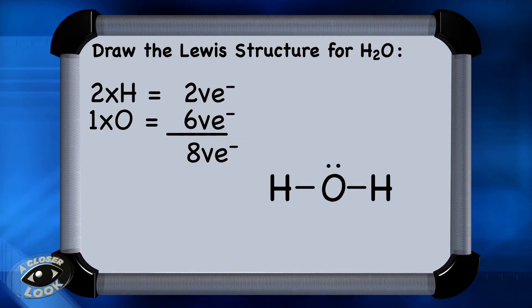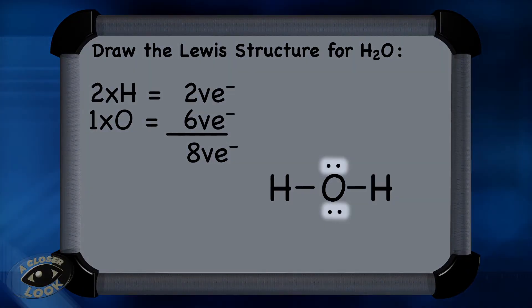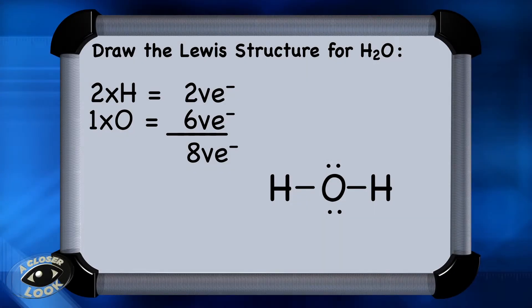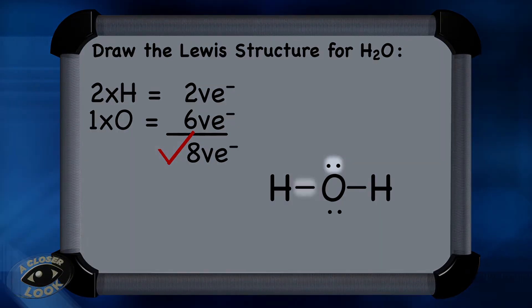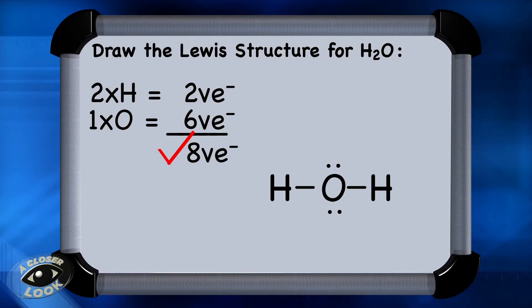Now place the lone pairs: 6, 8 — that equals the original total of 8 electrons. Always check to make sure that each element in the structure is stable. Hydrogen only needs 2 electrons to be stable, and each hydrogen gets to claim its 2 electrons. Oxygen has 2, 4, 6, 8 electrons around it, so it is stable too. All 8 electrons have been placed, completing the Lewis structure.